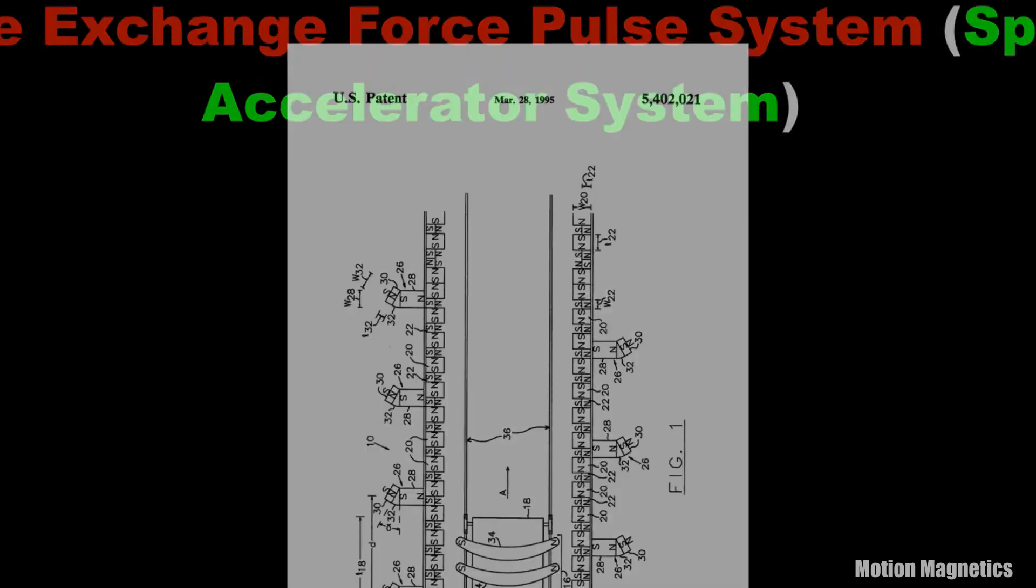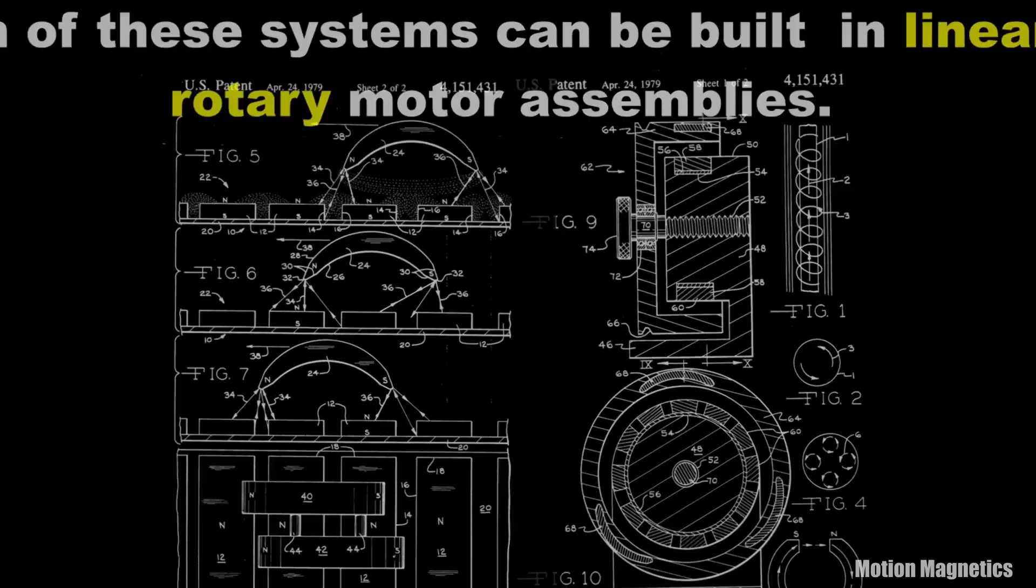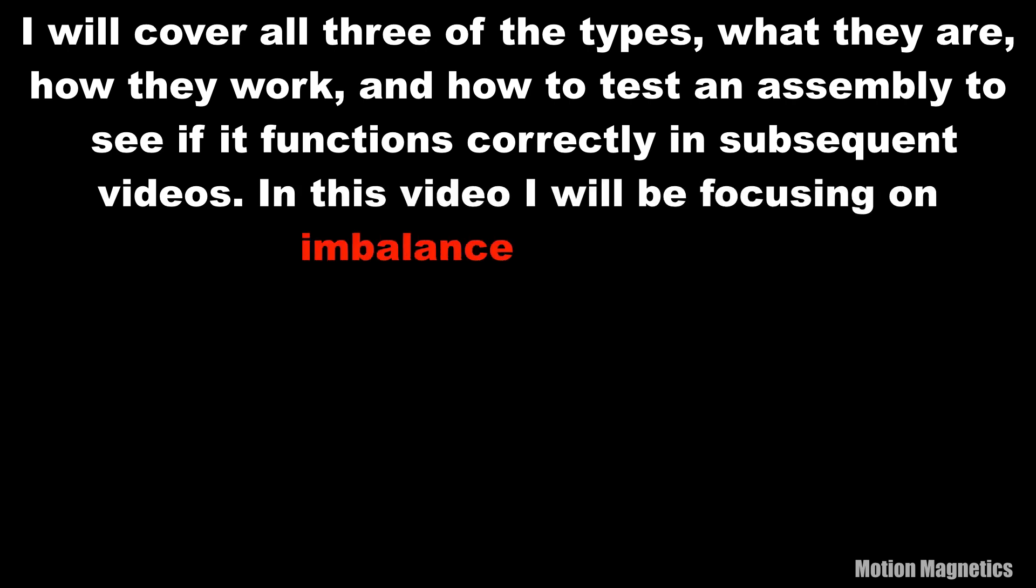Each of these systems can be built in linear or rotary motor assemblies. I will cover all three of the types, what they are, how they work, how to test, and assembly to see if it functions correctly in subsequent videos. In this video I will be focusing on imbalanced systems.